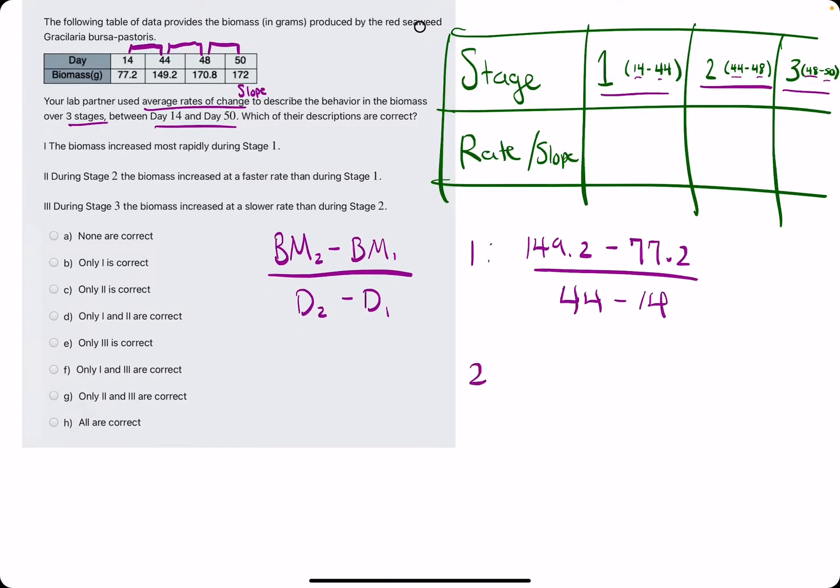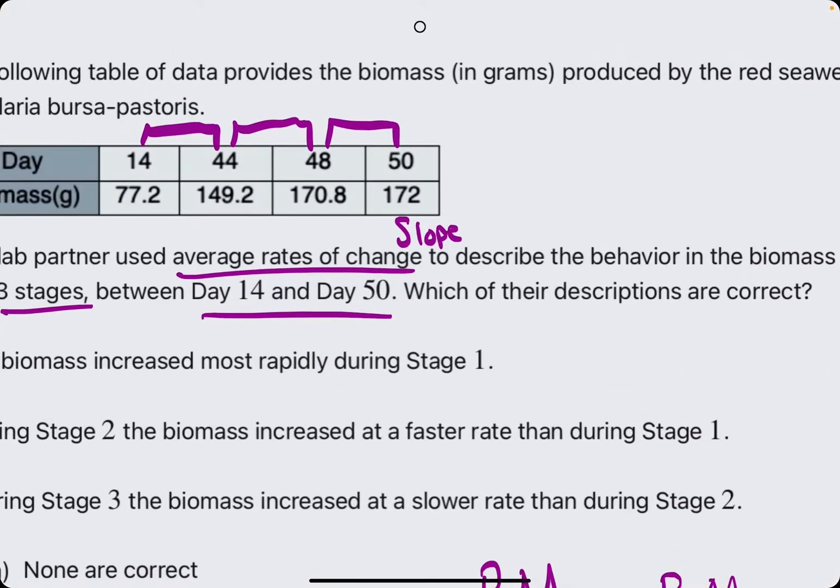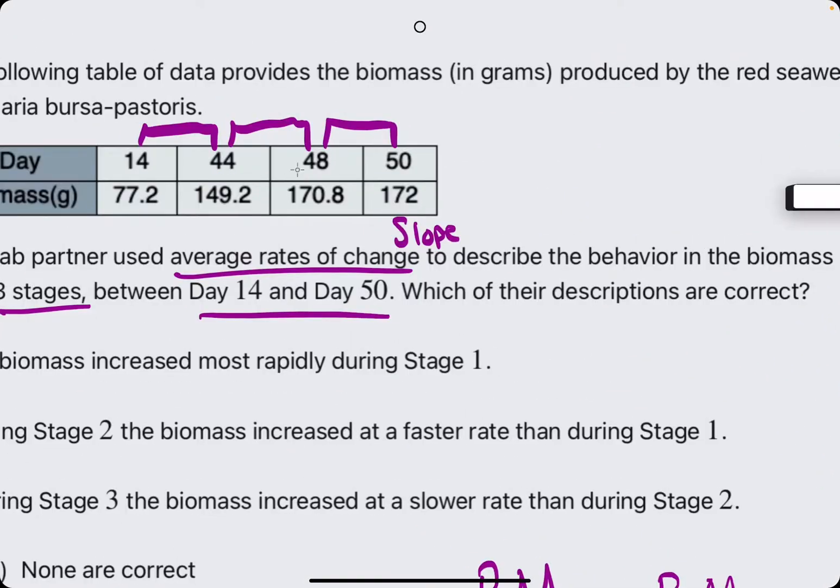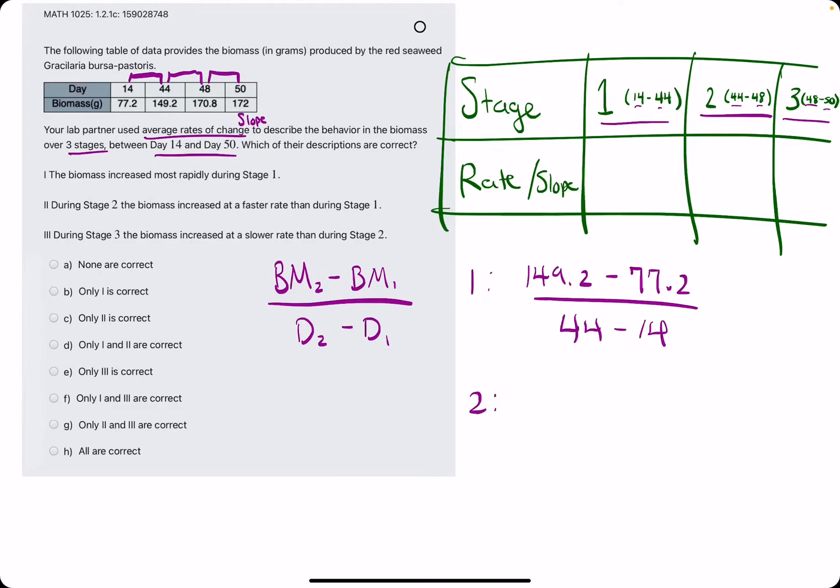I'll go ahead and set up the other one. So for stage 2, we'll do the slope between 44 and 48. So we will have the Y values, or the biomass values, 170.8 minus 149.2, all divided by 48 minus 44.